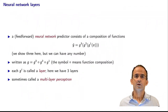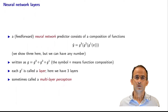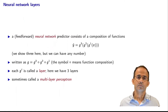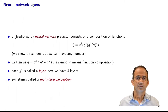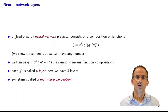In a neural network — in particular, here we're talking about feedforward neural networks; there are other types we will see later in the class — a feedforward neural network consists of a composition of functions. Y-hat is g3 composed with g2 composed with g1 of x, in the case where we have three layers, but we might have any number of such functions. Those functions are called layers.